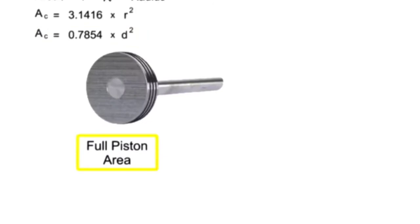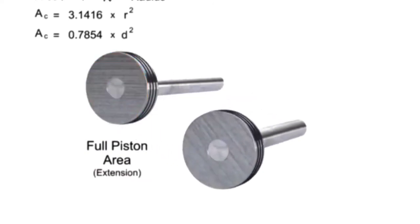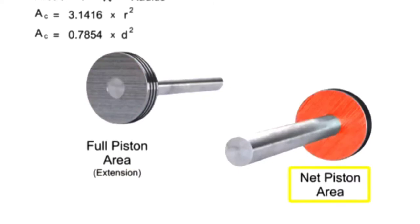The full piston area is the side of the piston without the rod. This is the area that sees pressure as the piston extends. The other side of the piston is called the net area. This area is the size of the full piston area minus the area of the rod. The net area feels pressure when the cylinder retracts.